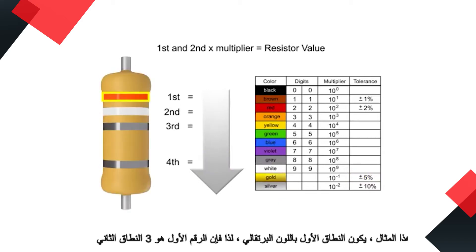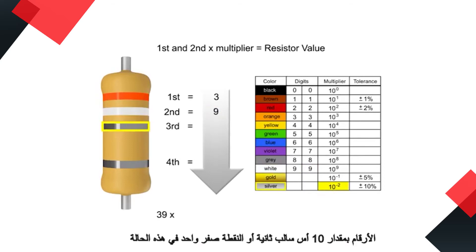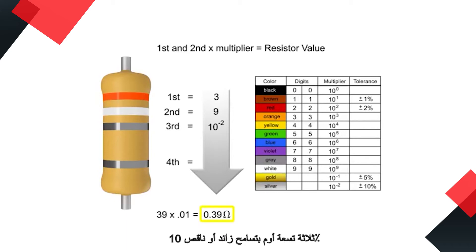In this example, the first band is orange so the first digit is three. The second band is white so digit two is nine. The third band is silver, so we multiply the first two numbers by ten to the negative second power, or 0.01. In this instance we would take the 39 and move the decimal point two places to the left, resulting in a value of 0.39 ohms. Thus the value of this resistor is 0.39 ohms with a tolerance of plus or minus ten percent.